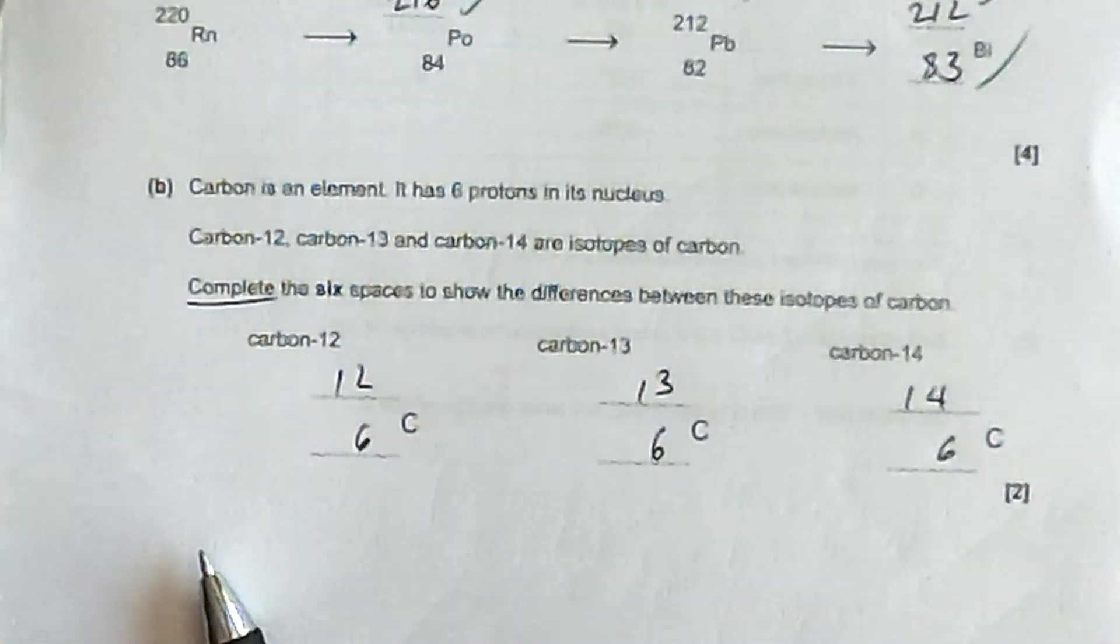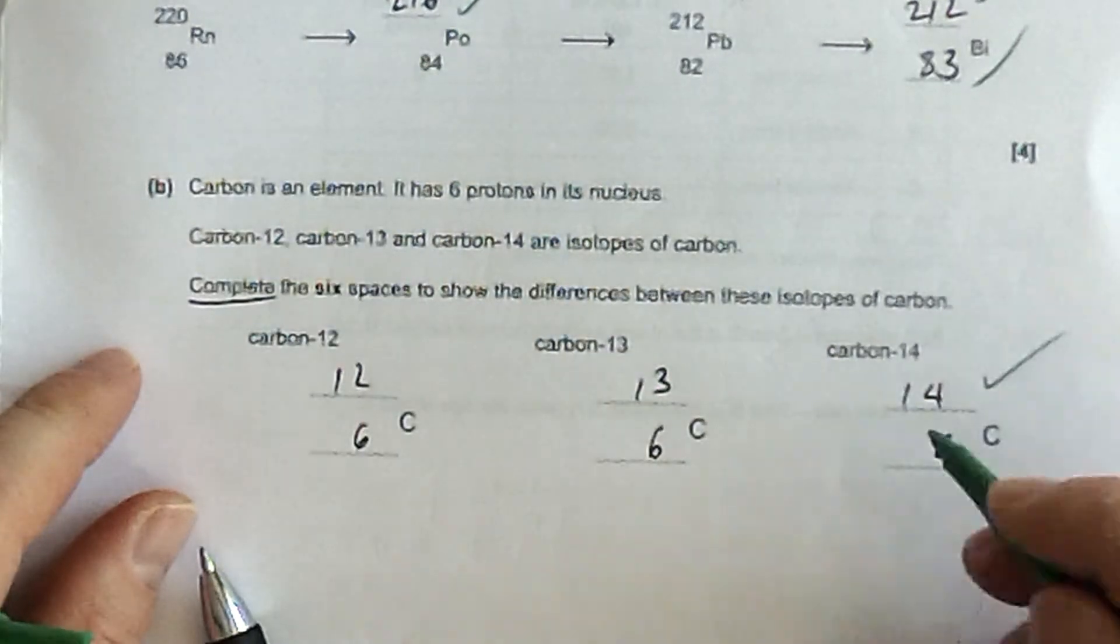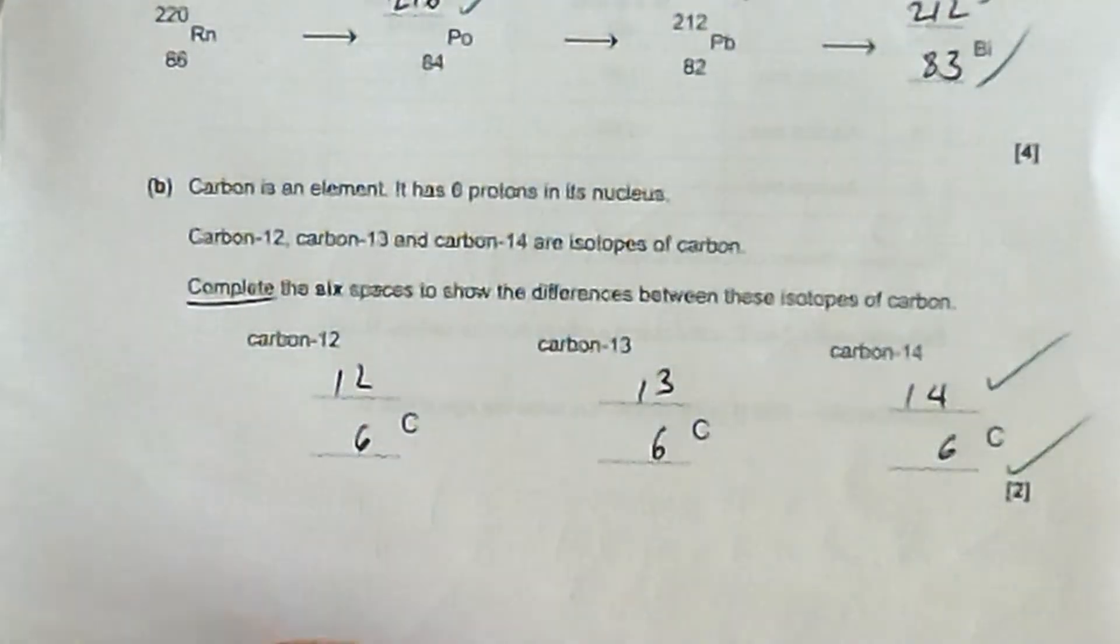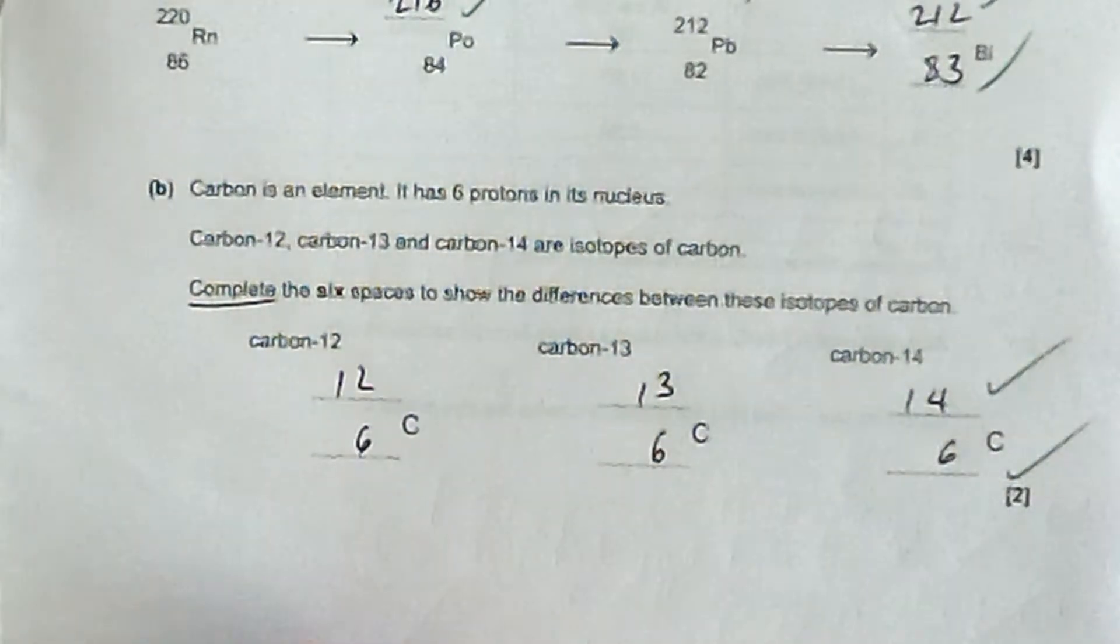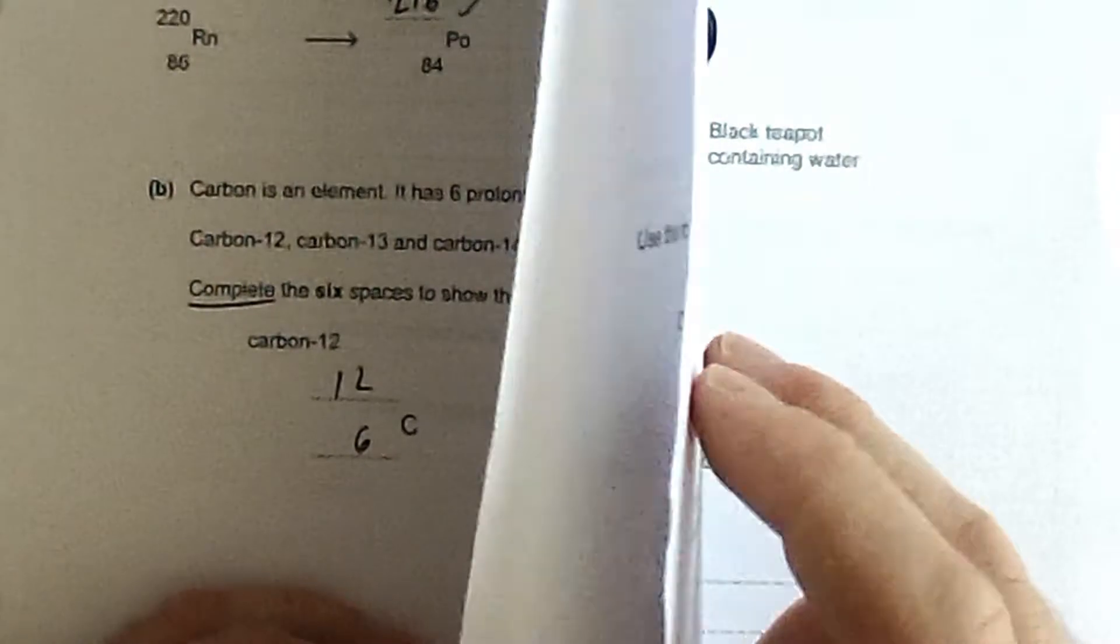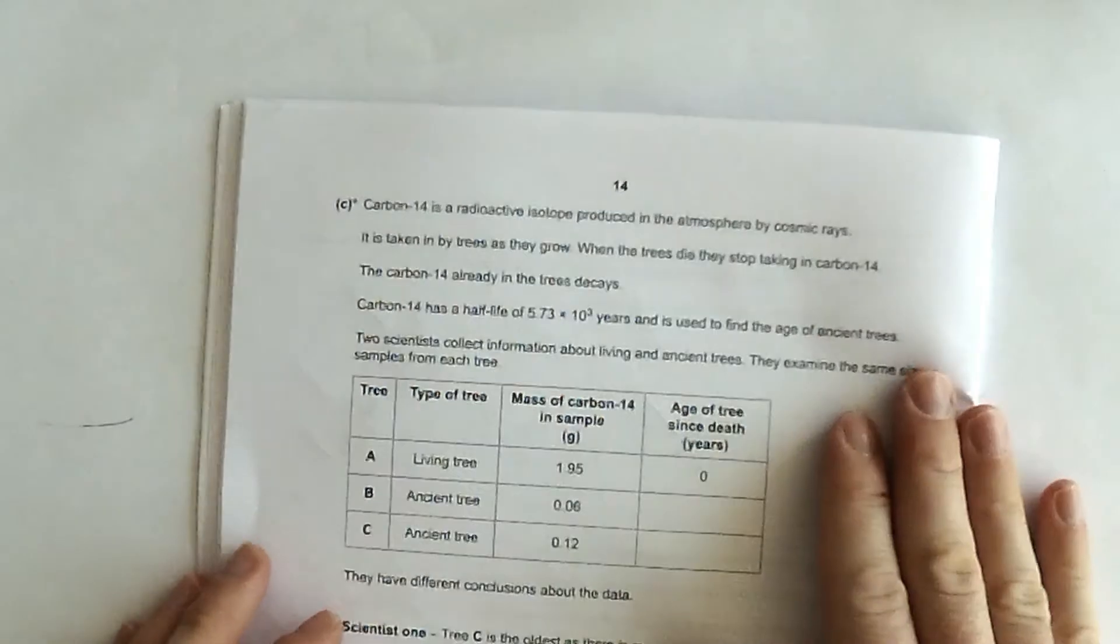The carbon always has 6 protons, so its atomic number is always 6, essentially just a mark for each line. So a mark for the right mass numbers and a mark for the right proton numbers or atomic numbers. In chemistry, you probably call them atomic numbers. In physics, let's call them proton numbers so we don't forget that.